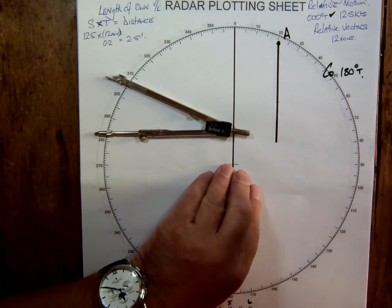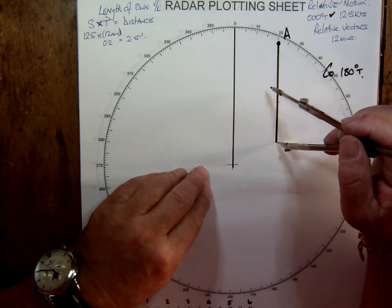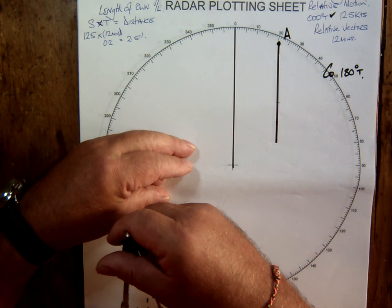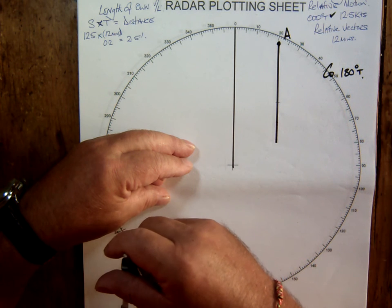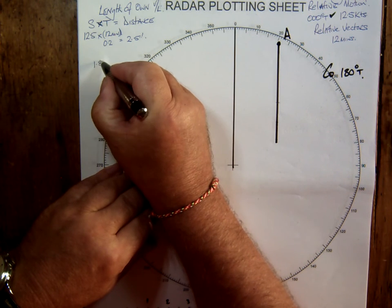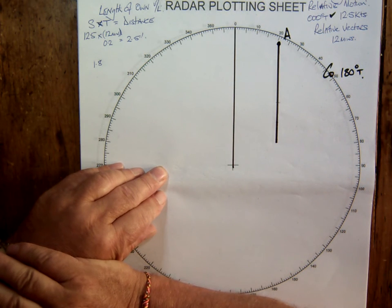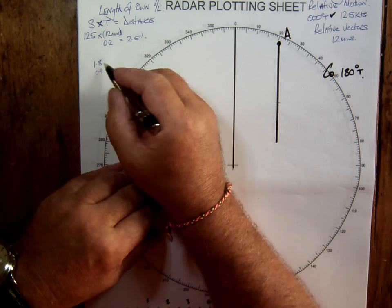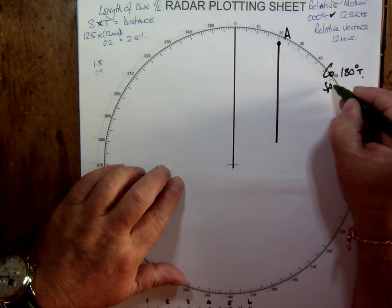What's her speed? I need to measure what she's done. That's just short of two miles — call it 1.8 miles. If I halve 1.8 that's 0.9, and then to convert: 0.9 divided by 0.1 gives nine knots. So her speed is nine knots.